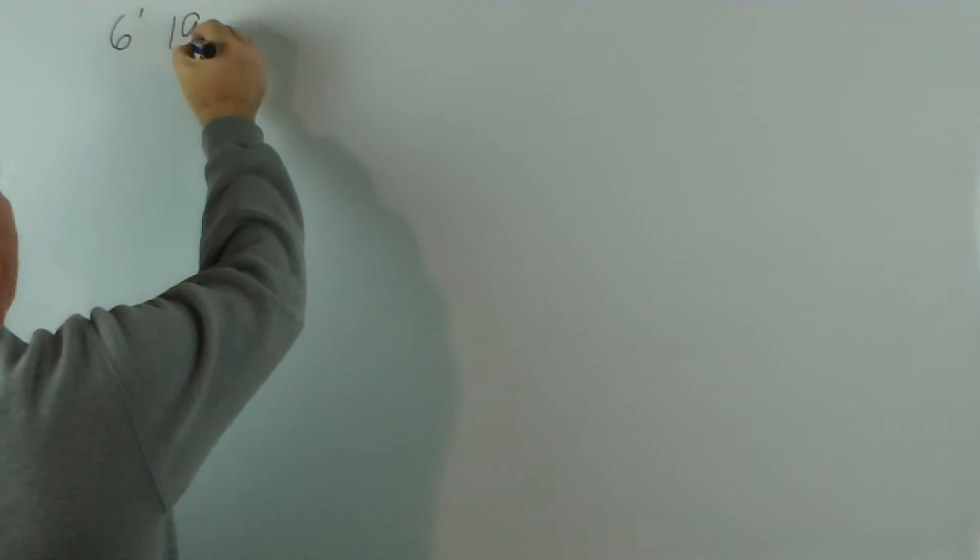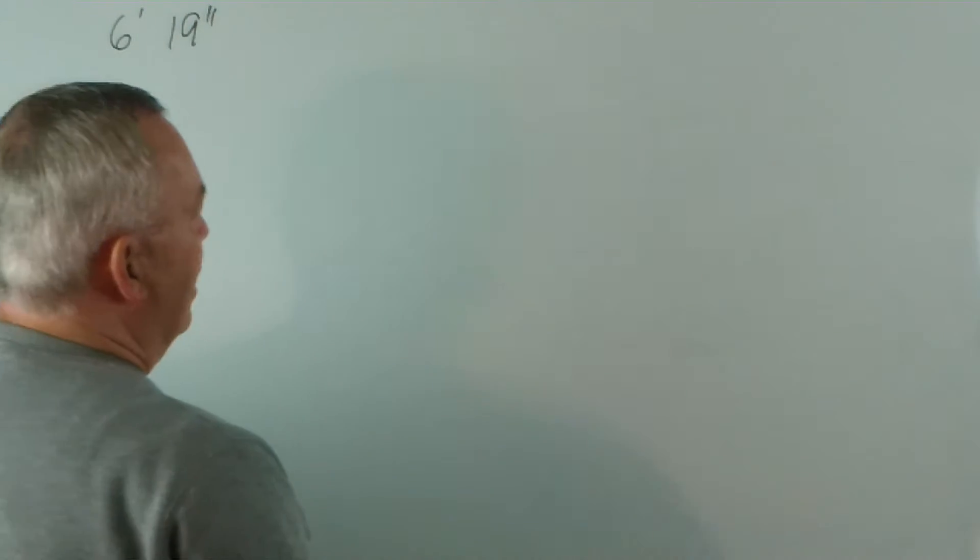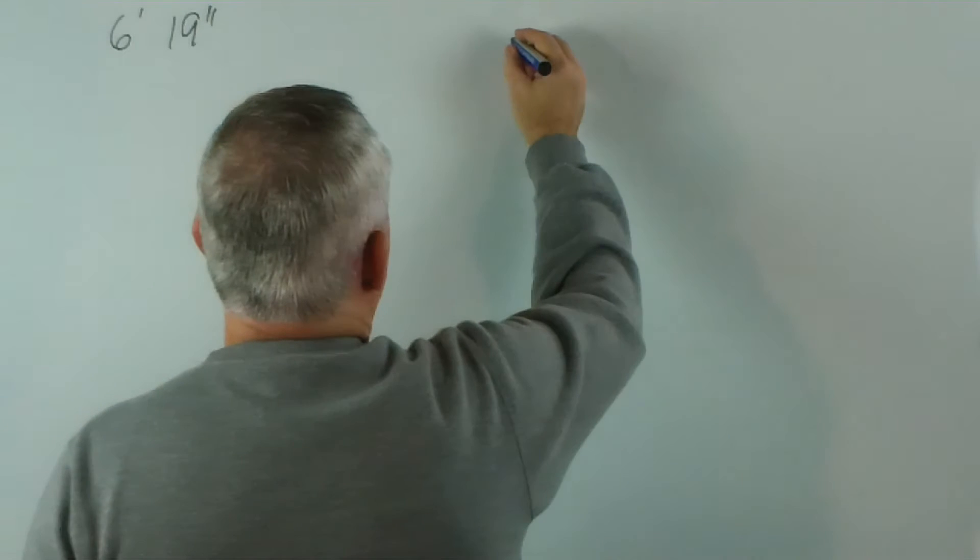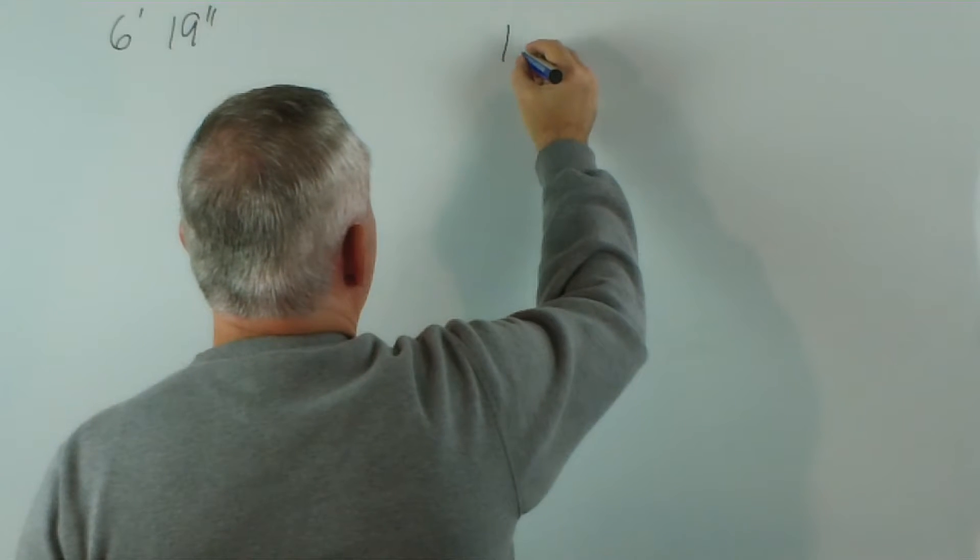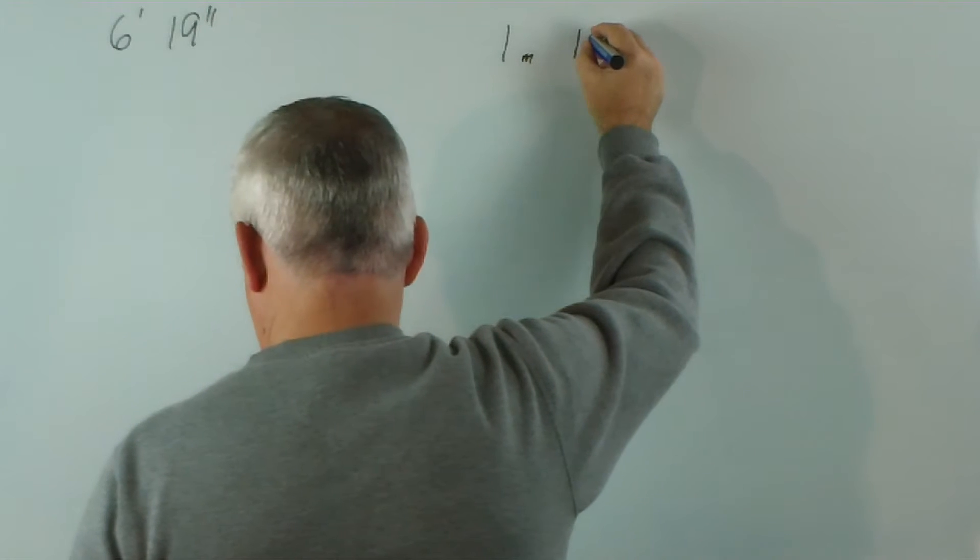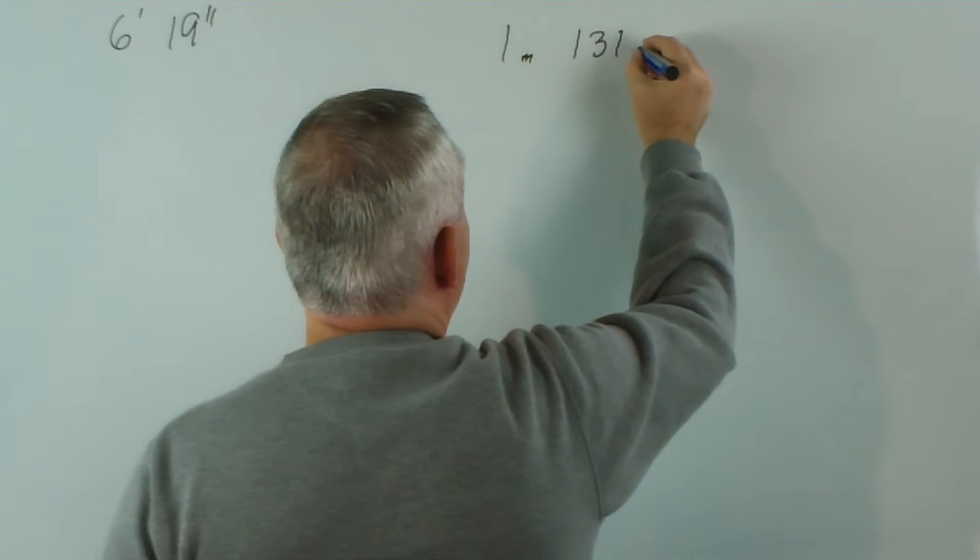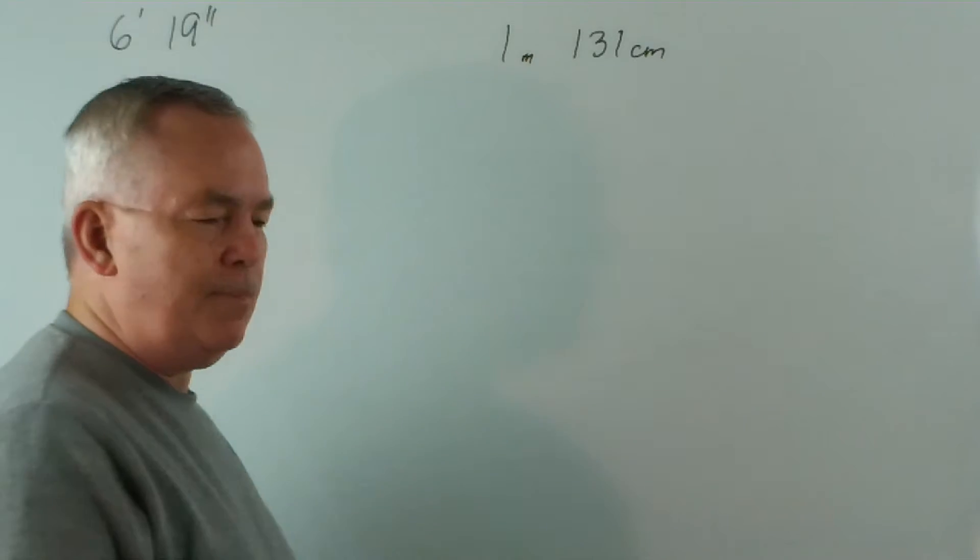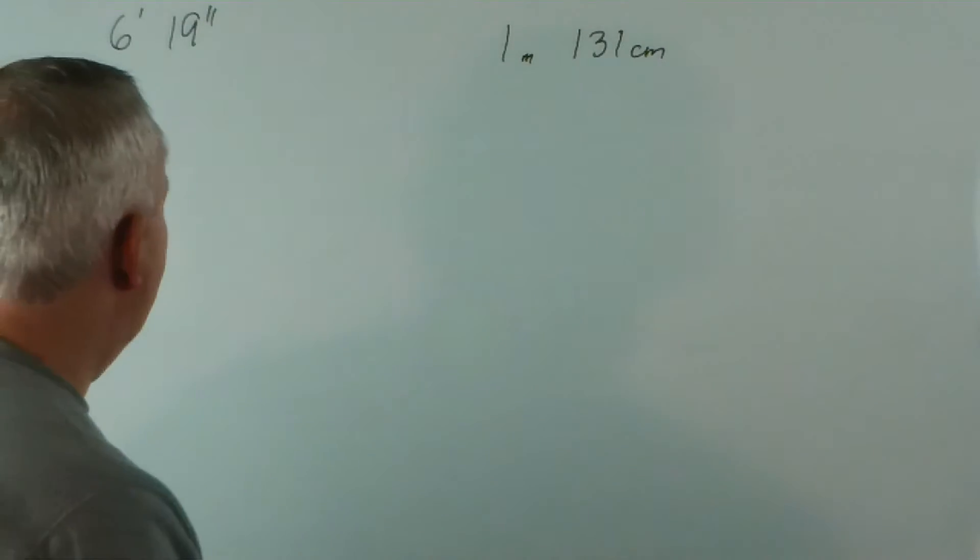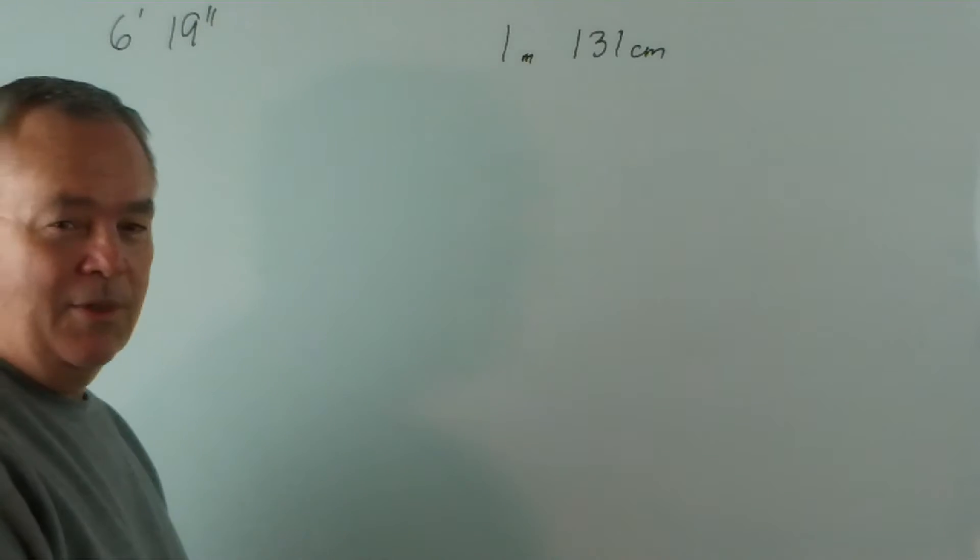Here he is. He said he was six foot nineteen inches. In today's money — or at least in the metric — he would have said he was one metre and an extra 131 centimetres. Now, you see, he played a slight little — or made a little bit of a joke of it.